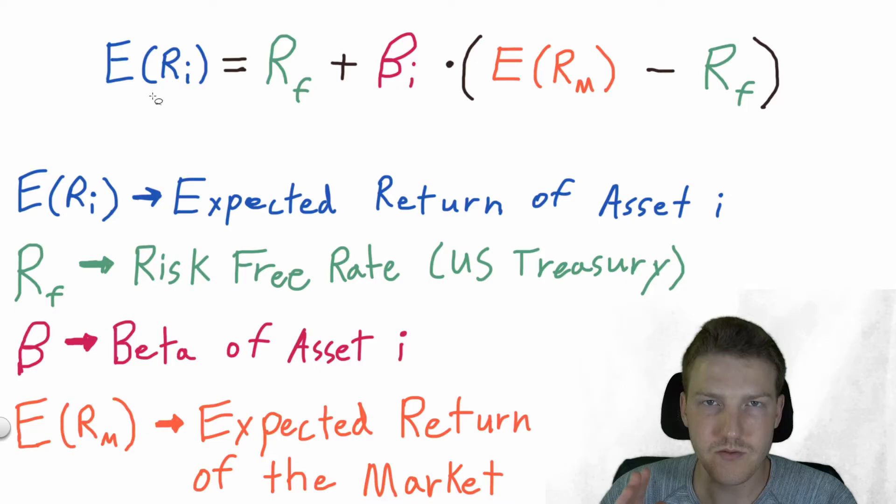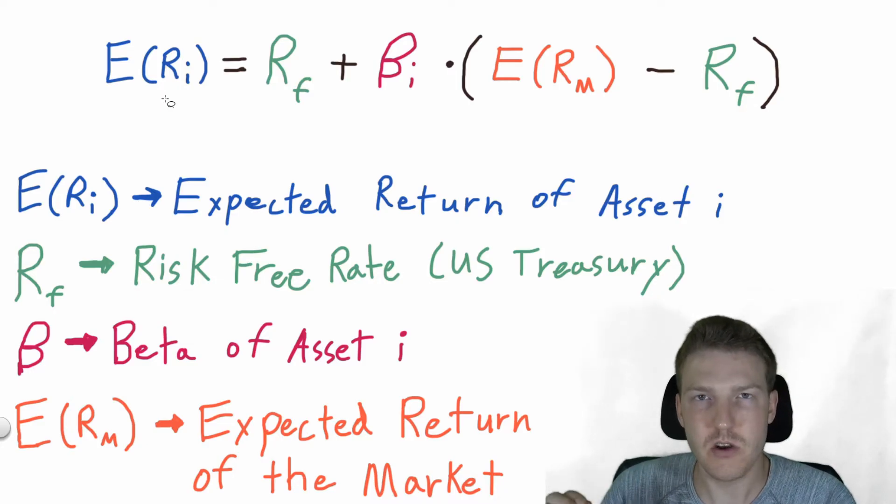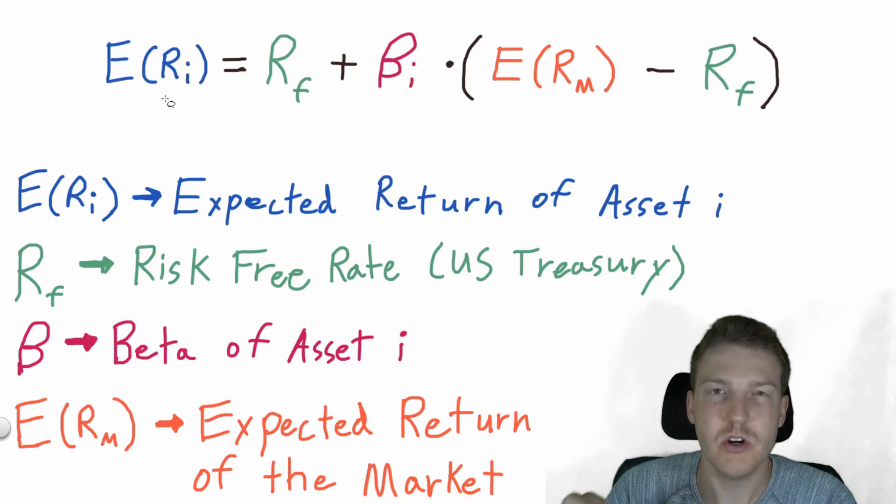What you're trying to find with the CAPM is the expected return of asset I. So we're trying to find how much percentage points in a year will this asset return on its investment for an asset, and we'll call that asset I.